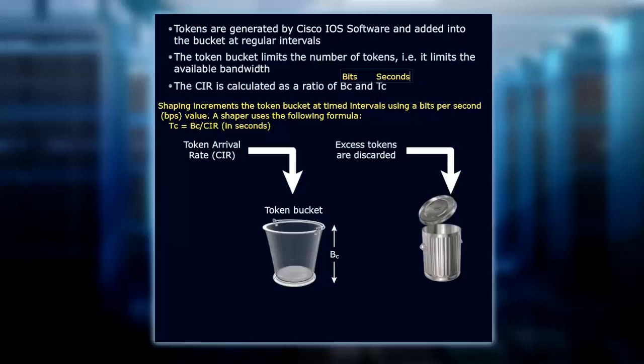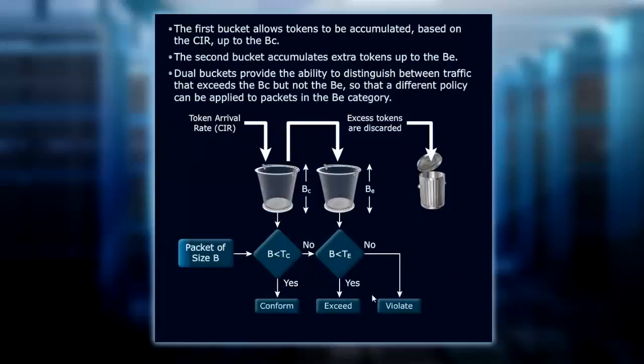Anything in excess of B sub C we wind up discarding. In a dual bucket class-based policing environment, the first bucket fills up like normal — we look at the committed information rate and the B sub C. Once we get above that, in a dual bucket environment, the second bucket will kick in. We accumulate until we hit the B sub E limit, and any excess at that point is discarded. The dual bucket gives us the ability to set up two different policies applied to packets in the first bucket and differently for packets in the second bucket.